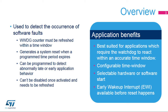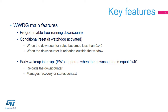An early wake-up interrupt can be generated before a reset happens to perform a system recovery or manage certain actions before a system restart. When the Window Watchdog is activated, a reset can occur when the down-counter value becomes less than 0x40 or when the down-counter is reloaded outside the time window. An early wake-up interrupt can trigger any action when the down-counter reaches 0x40. The EWI status register can be used to reload the down-counter to avoid generating a reset, or to manage system recovery and context backup operations.